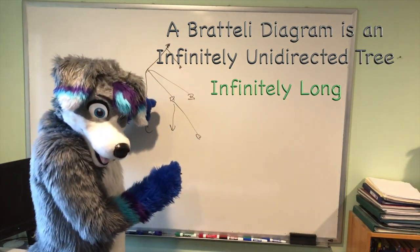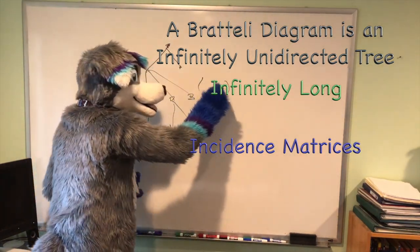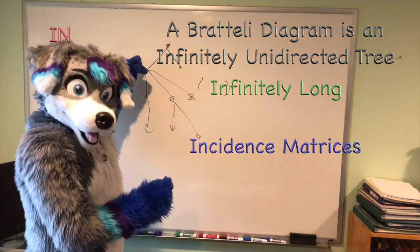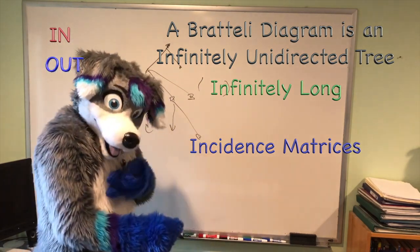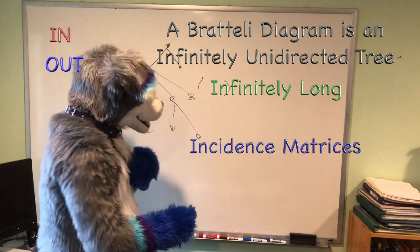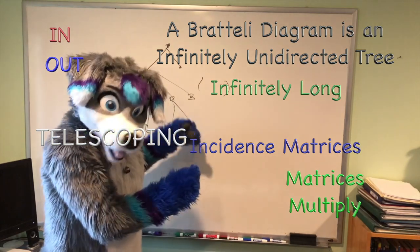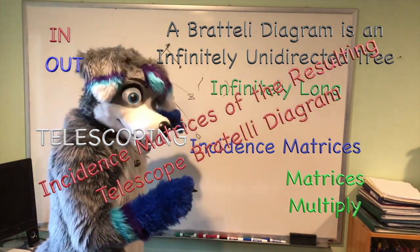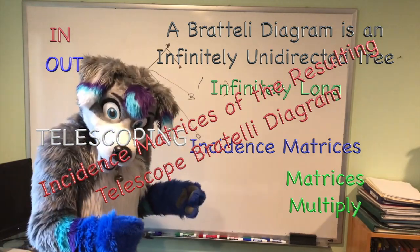And then at each level, you can talk about the incidence matrices. These are, of course, the matrices that give you the number of in and out. And then you might know, if you remember from Bratteli diagram theory, there's the operation of telescoping, in which case the matrices multiply to give you the incidence matrices of the resulting telescope Bratteli diagram. So that's pretty cool.